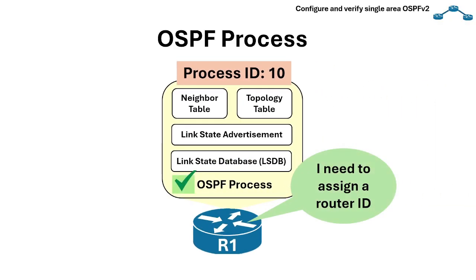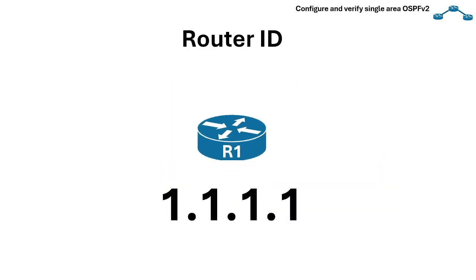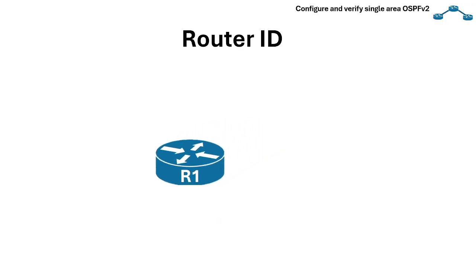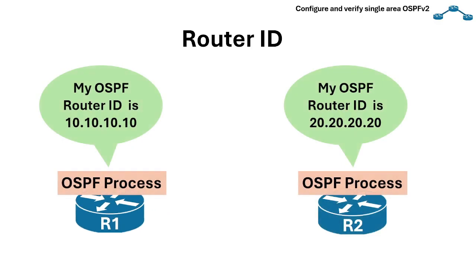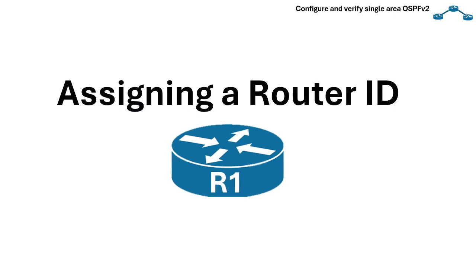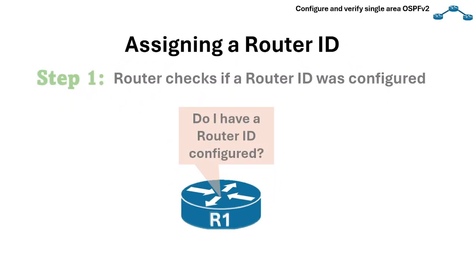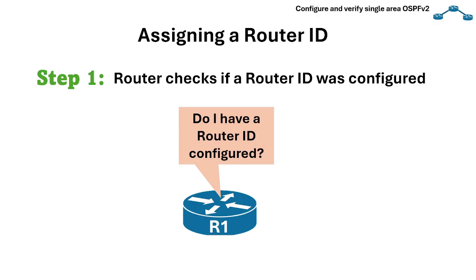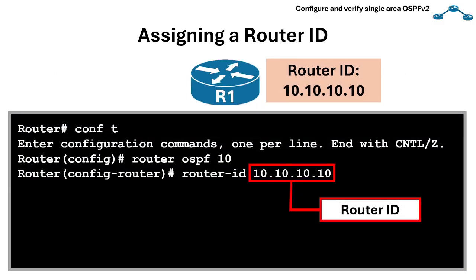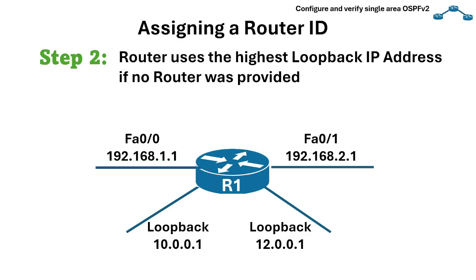Once we enable the OSPF process, the device first tries to assign a router ID. An OSPF router ID is a unique 32-bit number formatted like an IP address that identifies each router within an OSPF domain, similar to a personal identification number for the router. The OSPF process cannot generate and send messages without a router ID. The first step when assigning a router ID is to check if a router ID was configured. We can use the command 'router-id 10.10.10.10', for example.